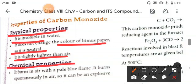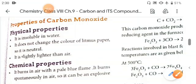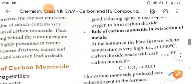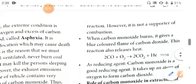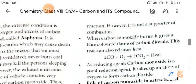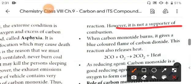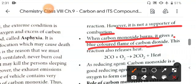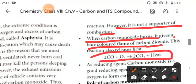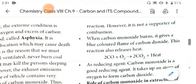Chemical properties: it burns spontaneously in air, so it can be an explosive reaction. However, it is not a supporter of combustion. When carbon monoxide burns, it gives a blue colored flame of carbon dioxide. This reaction shows that carbon monoxide burns with oxygen and gives carbon dioxide plus heat.